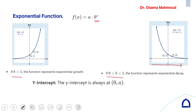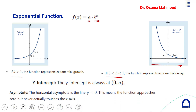The y-intercept: when you put x equal to 0, any value to the power 0 is 1, so you end up with a. Your y-intercept is always (0, a). Regarding asymptotes, we don't have a vertical asymptote because there is no gap in the curve.